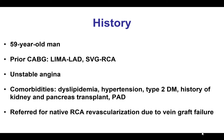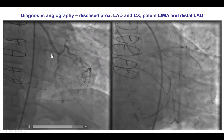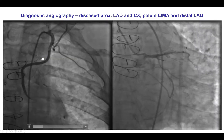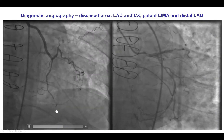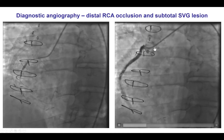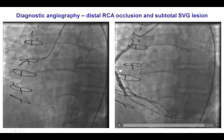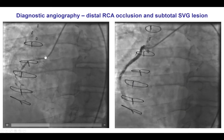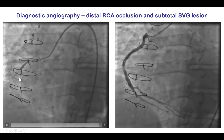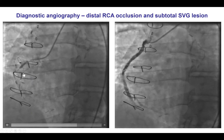Diagnostic angiography, as I will demonstrate in the following slides, showed a severe high-grade lesion of the saphenous vein graft to the right coronary artery. As expected, the LIMA was in good condition supplying the left anterior descending artery. The left main and circumflex were patent. However, the saphenous vein graft to the right had a high-grade thrombotic-appearing lesion, whereas the native right coronary artery was occluded in the mid-segment with an acute marginal originating at the proximal cap.